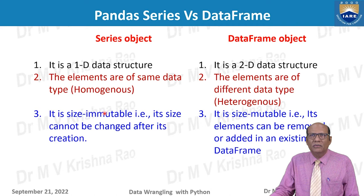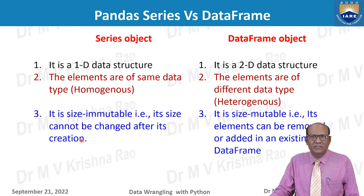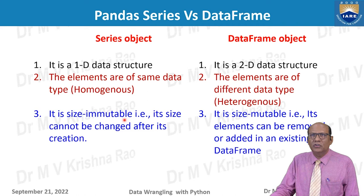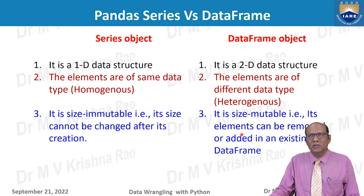The Series is size immutable, similar to a NumPy array. Once you fix the size and create it, you cannot change it after creation. If you want to change it, creating a new one will replace the old one. That is why Series is an immutable object, whereas DataFrame is a mutable object. A DataFrame must be size mutable because you are going to manipulate data — adding and deleting rows and columns must all be possible.